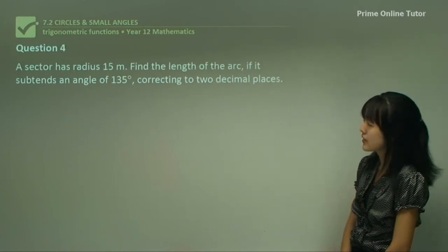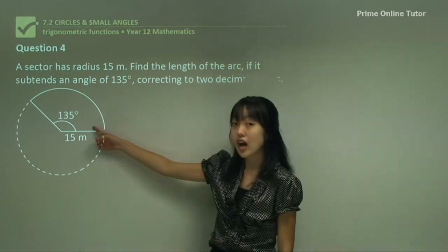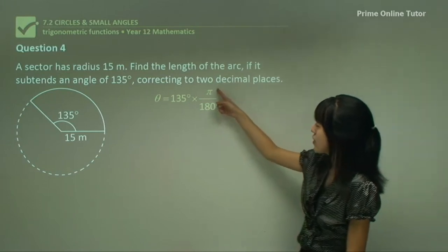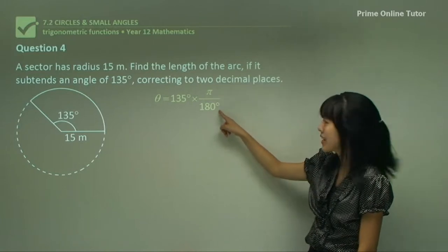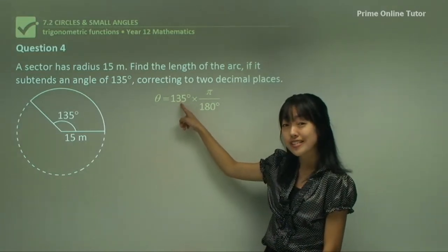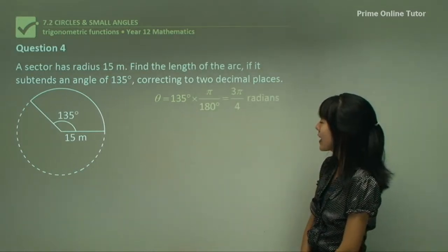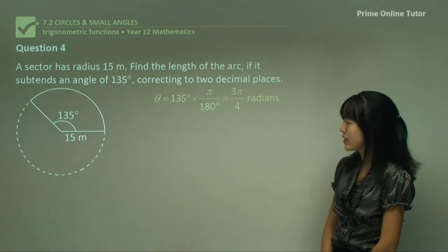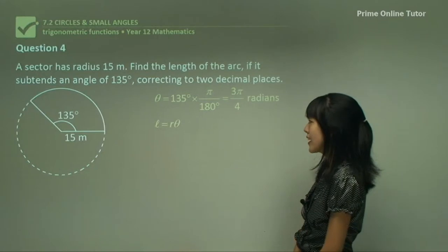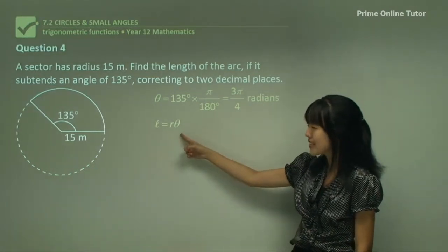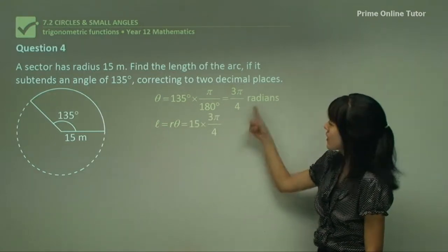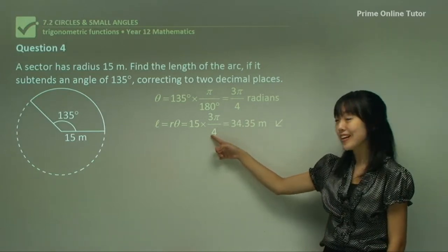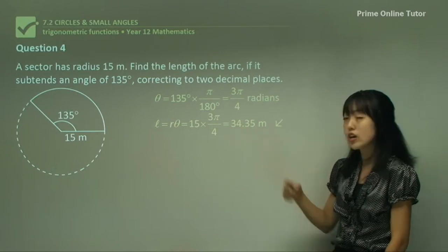Question 4 is the same as the previous question with different values. They've given us an angle of 135 degrees, so we have to convert that into radians. Pi is equivalent to 180 degrees, so we figure out the equivalent of 135 degrees. Simplifying, 135 degrees converts to 3π/4 radians. Using L equals R theta with radius 15 and angle 3π/4, and since the question says correct to two decimal places, put it in the calculator — your final answer is 34.35 metres.